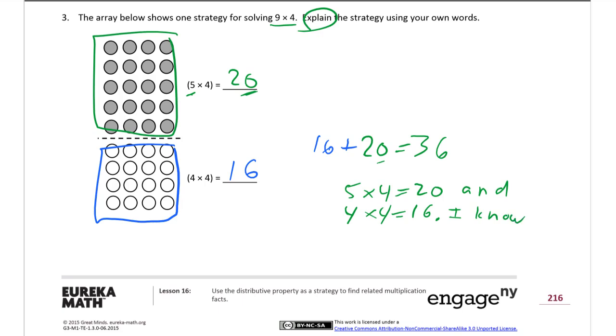And 4 times 4 equals 16. I know 5 rows plus 4 rows equals 9 rows of 4. So, 9 times 4. Remember, that's what we were trying to do in the first place is 9 times 4. So, 9 times 4 equals 20 plus 16 equals 36.